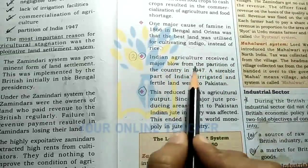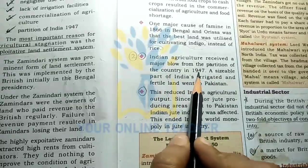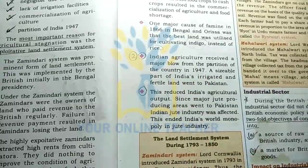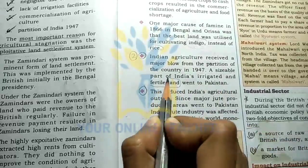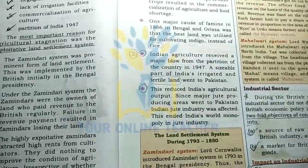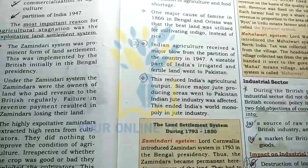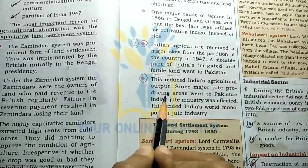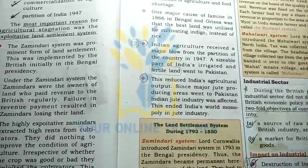Indian locals received a major blow from the partition of the country in 1947. Fertile lands went to Pakistan. The jute-producing areas also became part of Pakistan, while the jute mills remained in India — a major disruption to the economy.